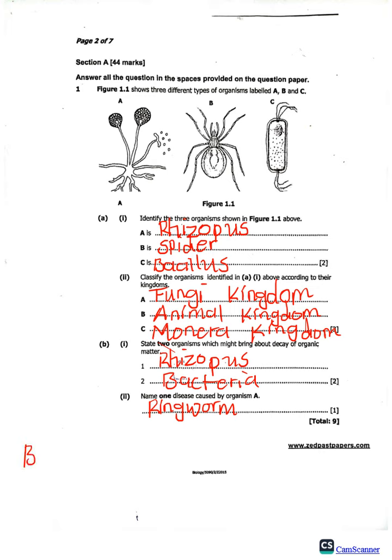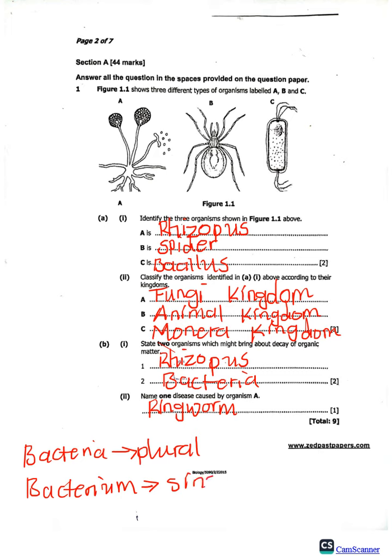One thing I want to note: the word 'bacteria' is the plural form. If you are looking at just one, that is a 'bacterium.' Take note of this when writing your answers — bacterium is singular, bacteria is plural. We do not add an 's' to make bacteria plural; never say 'bacterias.'